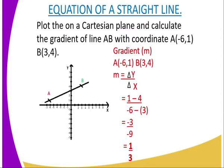On to the equation of a straight line. You are provided with this question: plot on a Cartesian plane and calculate the gradient of line AB with coordinate A(-6, 1) and B(3, 4). How do we calculate the gradient?